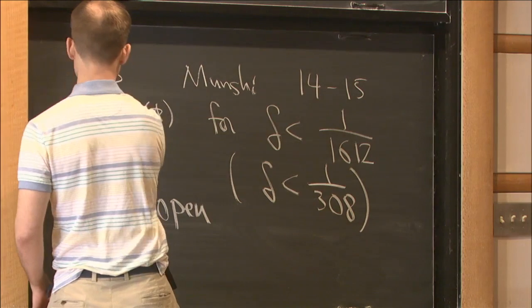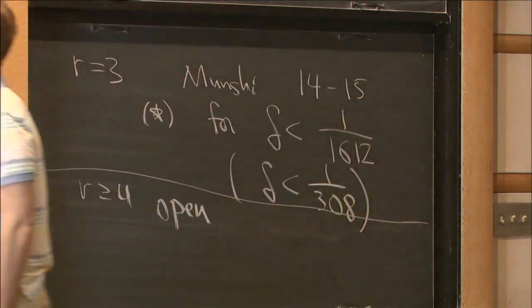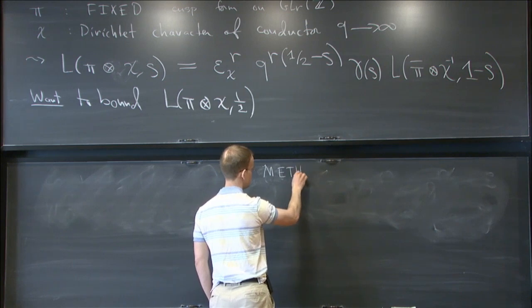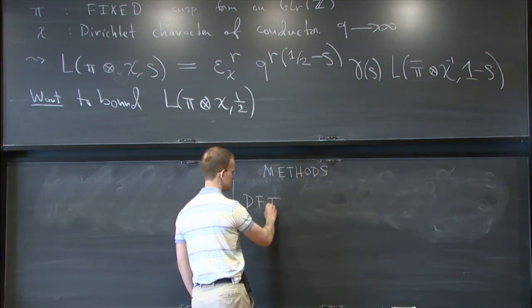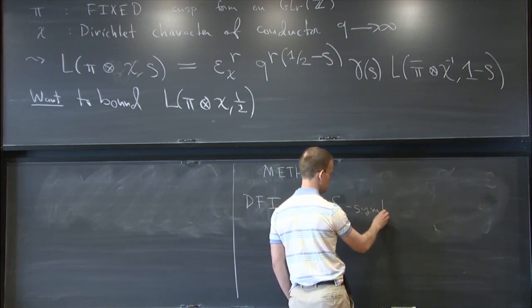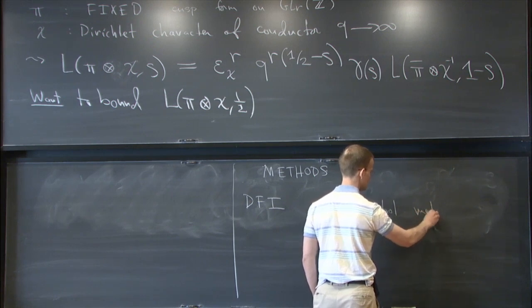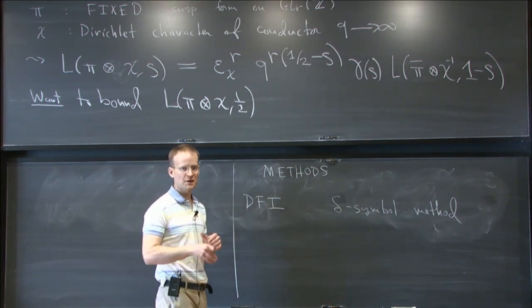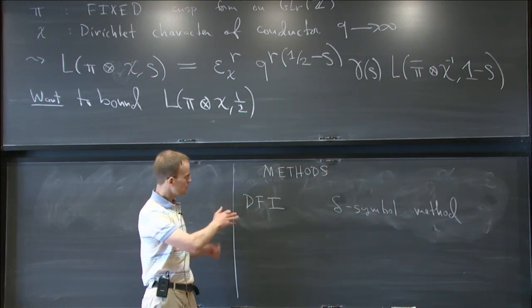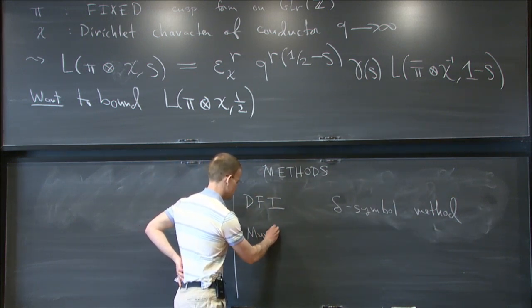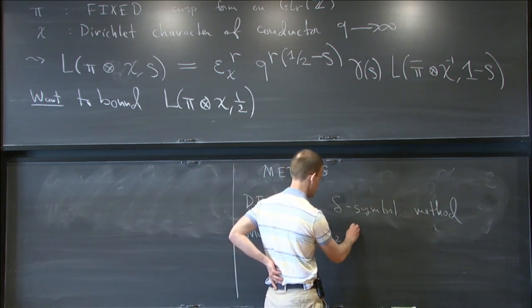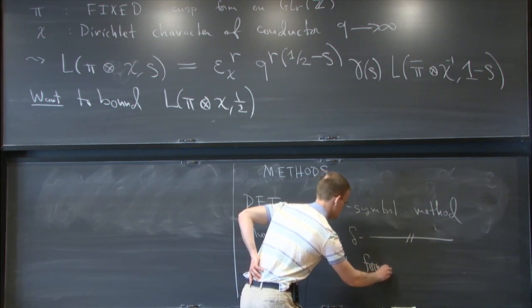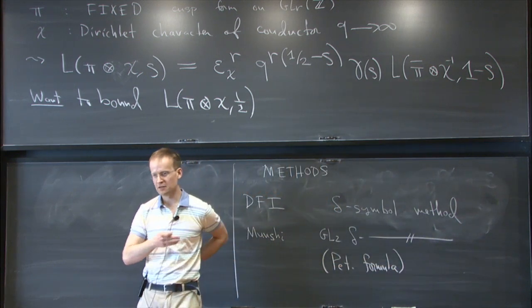To add a few adjectives regarding what these authors used. DFI used something called the delta symbol method, which gives an analytic tool for detecting an identity between two integers, say m and n. Munshi introduced another tool called the GL2 delta symbol method, which involves some kind of unexpected application of the Peterson formula.